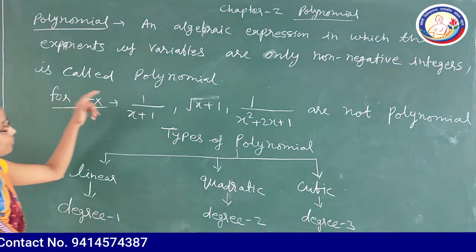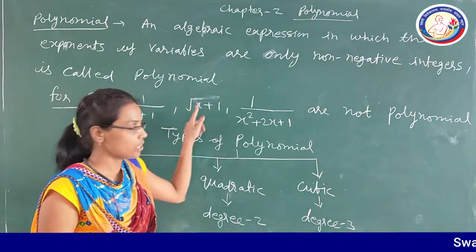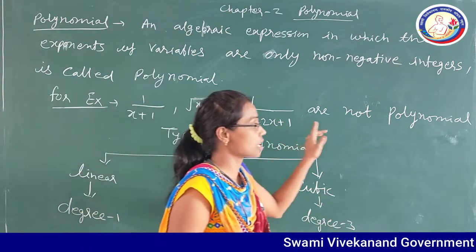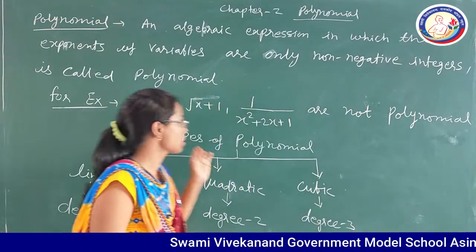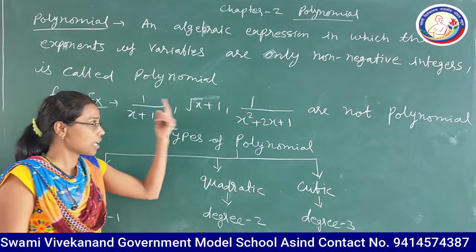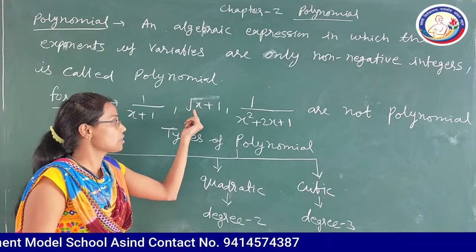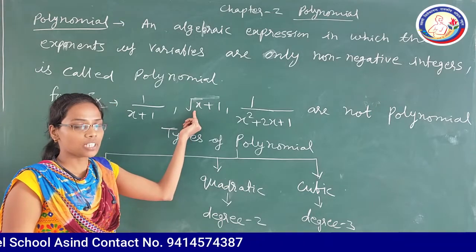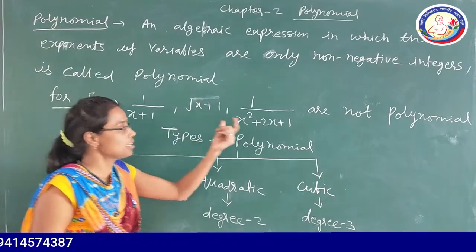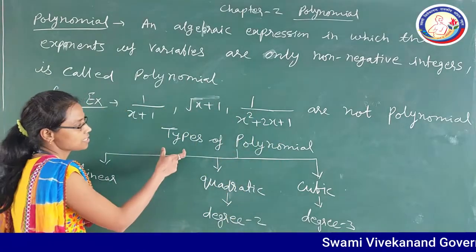For example, 1 upon x, 1 plus under root x, and 1 upon x² plus 2x plus 1 are not polynomials because the exponent of the variable is minus 1, or half — under root x means power is half, which is a fraction, not a whole number. So these are not polynomials.